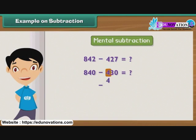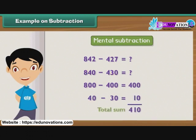First, subtract 400 from 800 to get 400. Then subtract 30 from 40 to get 10. Therefore, the difference between 840 and 430 is 410.